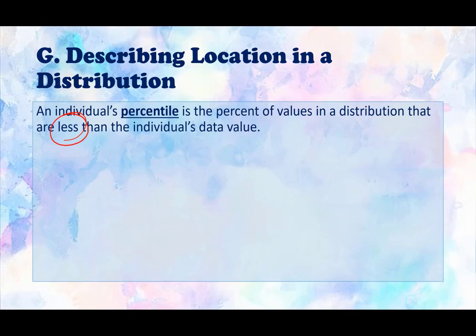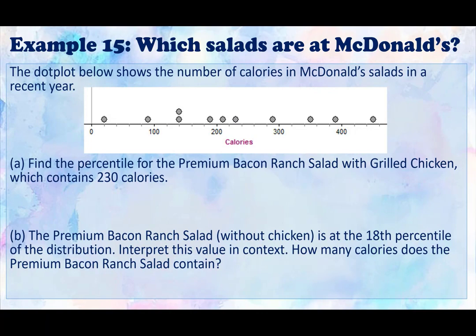We're going to do an example on the next page. Example number 15, which salads are at McDonald's? The dot plot below shows the number of calories in McDonald's salads in recent years. We're going to find the percentile for the premium bacon ranch salad with grilled chicken, which contains 230 calories. We're going to be looking at our dots over here. 230 calories appears to be right here.